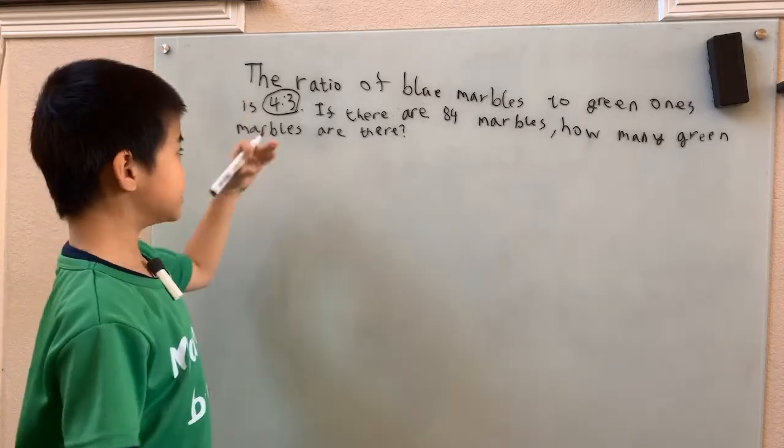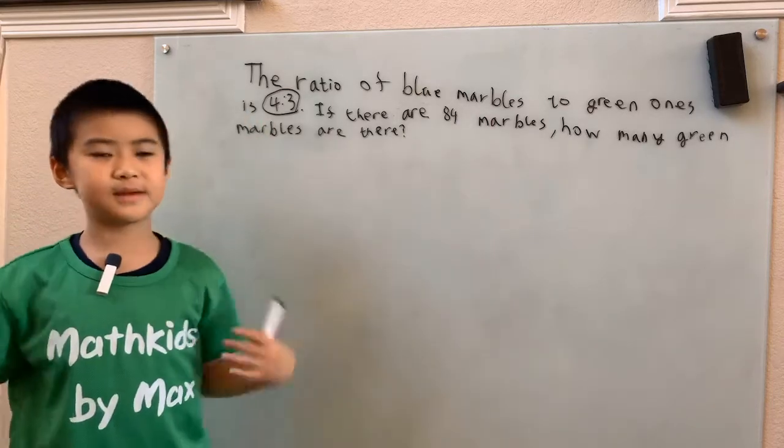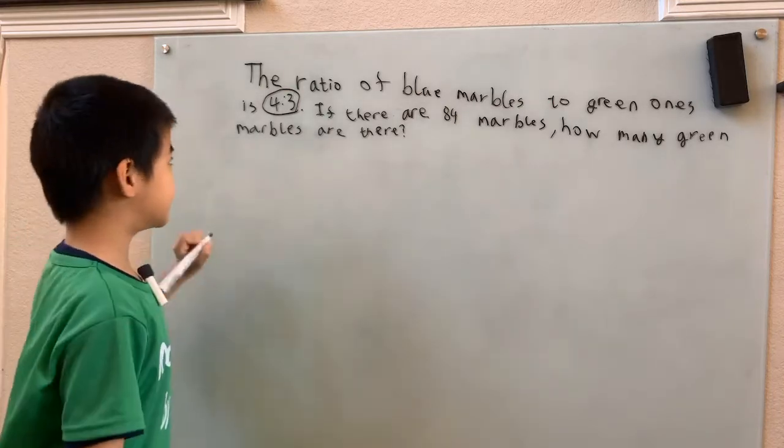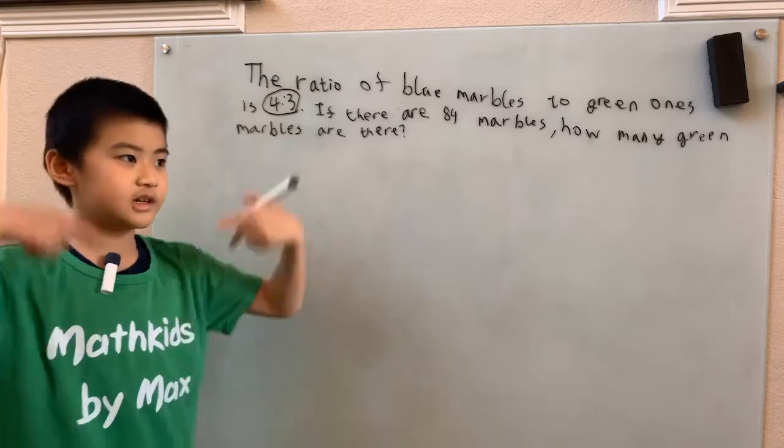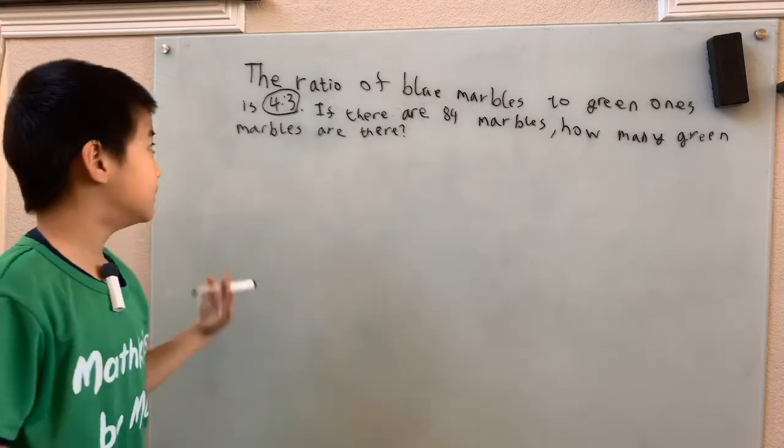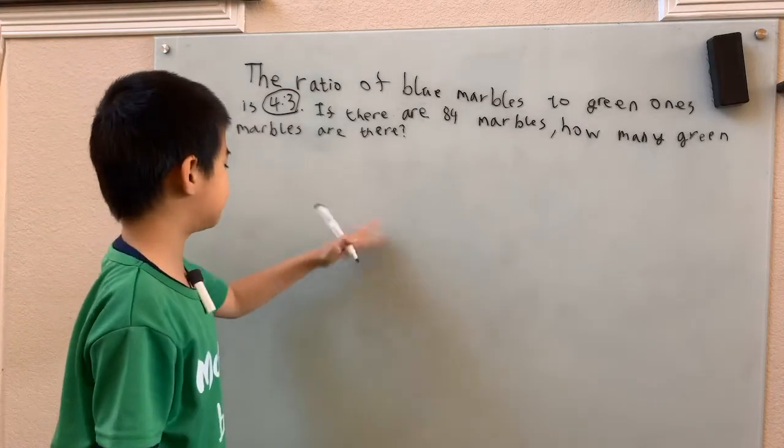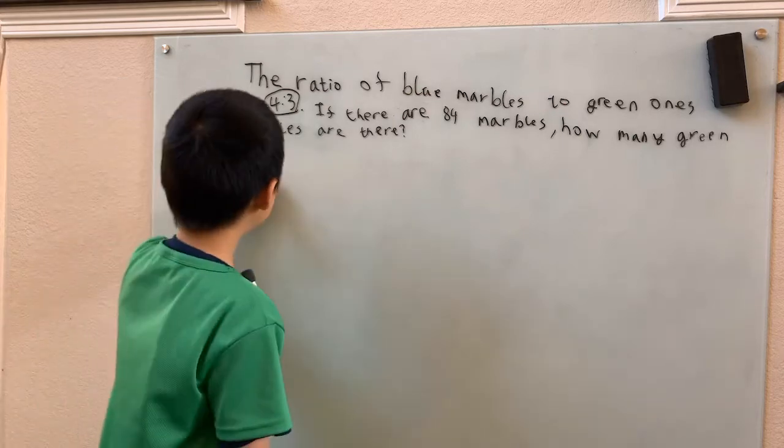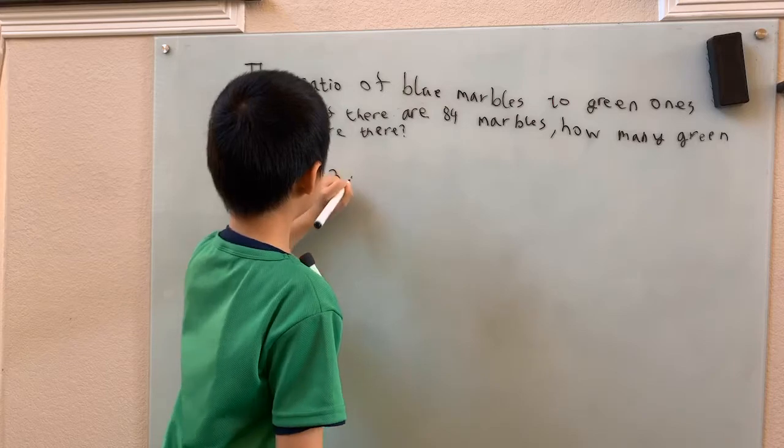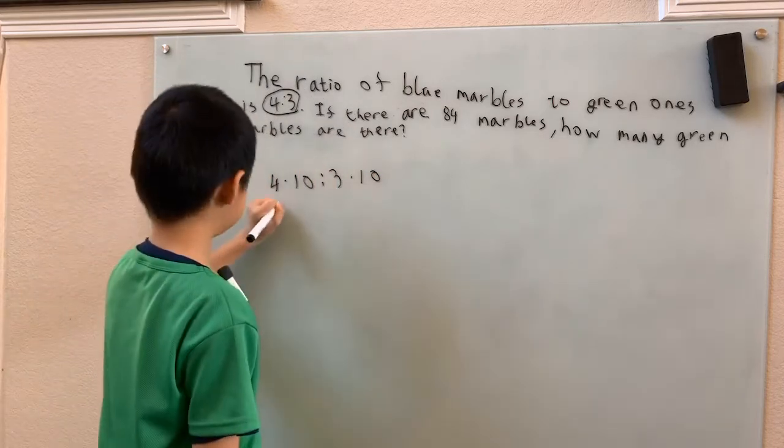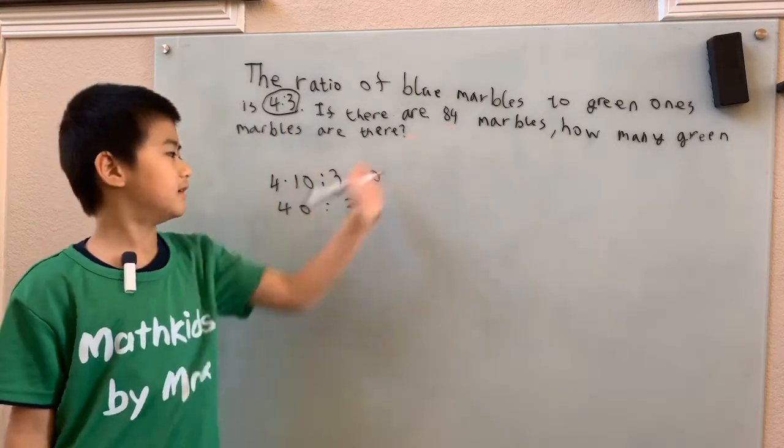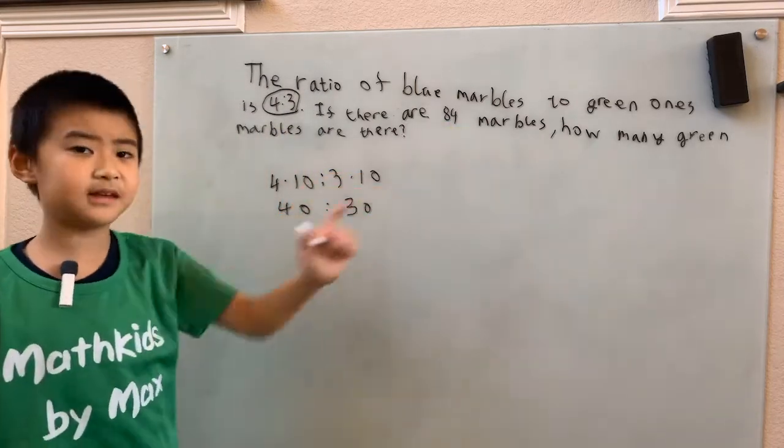So here we just have to... there's two ways to solve this problem. If you're a beginner, I'll teach you this way. We can just scale these up until we get to a total of 84 marbles. We can multiply both of these numbers by 10. Then 4 times 10 to 3 times 10, that's 40 to 30. 40 plus 30 is 70. Not quite there.